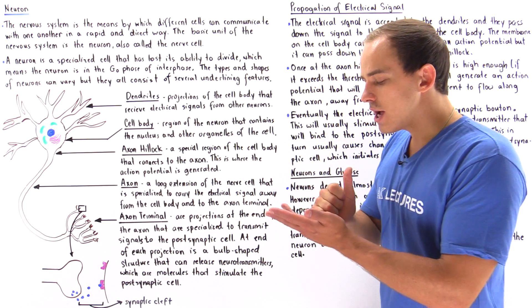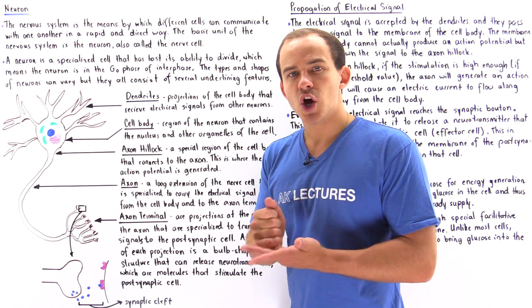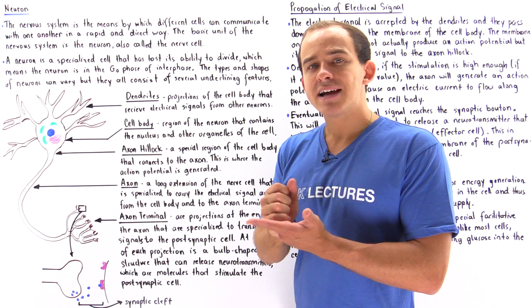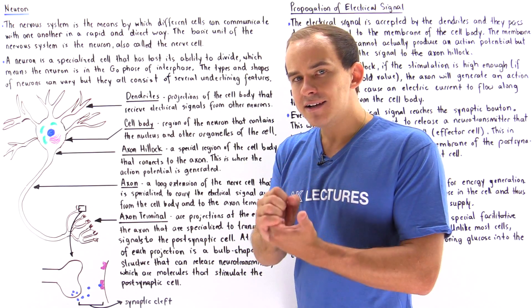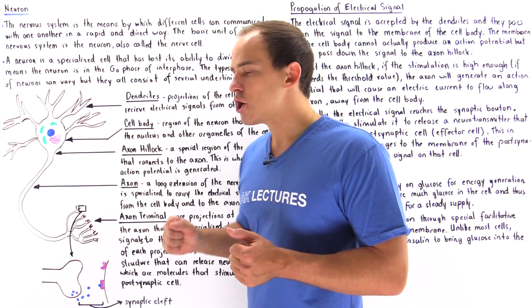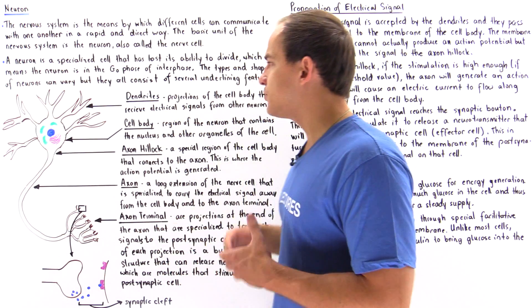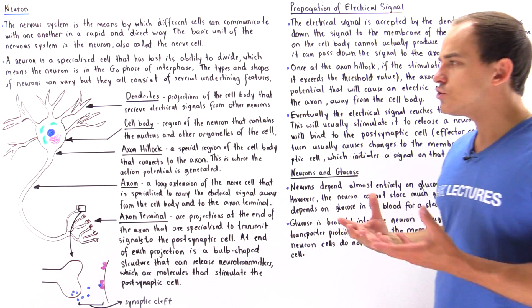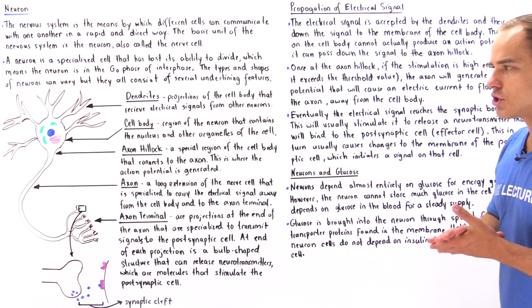Those features are: dendrites, the cell body also known as the soma, the axon hillock, the axon, as well as the axon terminal. Let's go through each one of these structures and discuss what the function of each structure is.